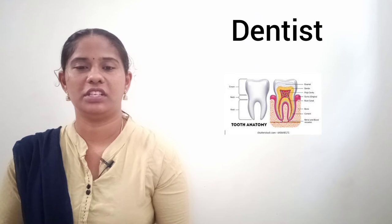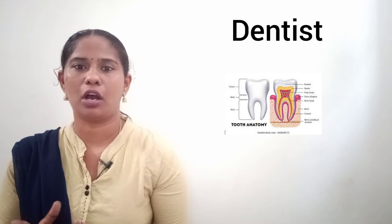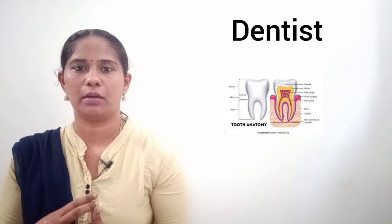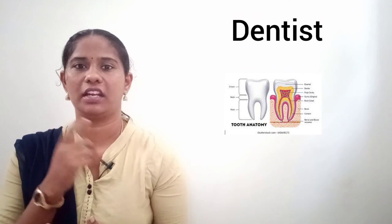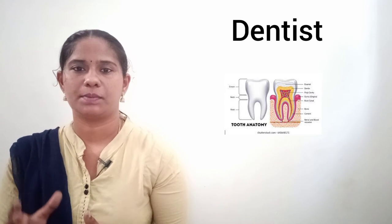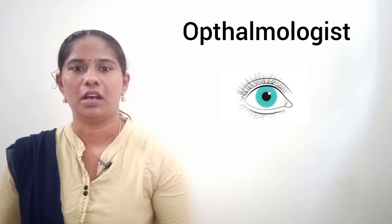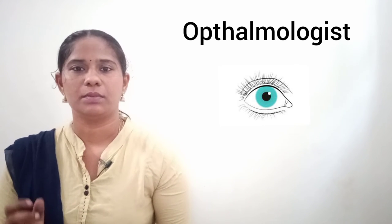The fourth one is a dentist. It is easy to say — dentist means a doctor of teeth and jaw bones. The fifth one is an ophthalmologist. Ophthalmologist means eye specialist. If we have any problems with the eyes, we will see the eye specialist.